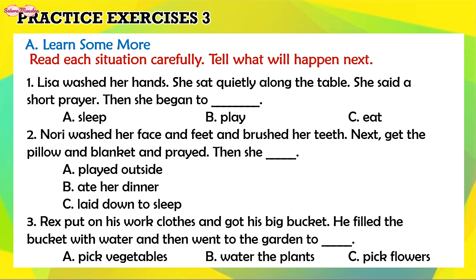1. Lisa washed her hands. She sat quietly at the table. She said a short prayer. Then she began to... A. Sleep. B. Play. C. Eat. The answer is C. Eat.